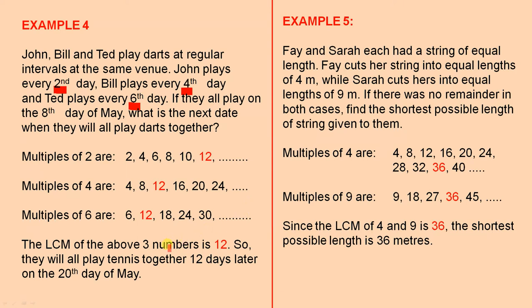The LCM of the above three numbers is 12, there, there, and there. So, they will all play tennis together twelve days later, on the twentieth day of May. See how they played on the eighth. Just add eight plus twelve, and that will give you the twentieth day of May.